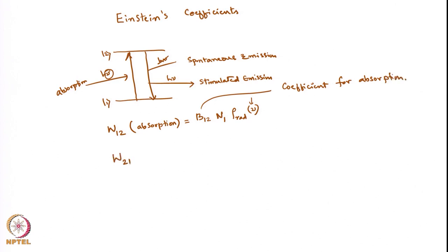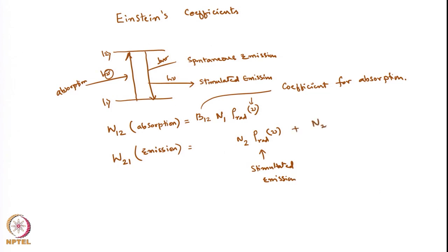Similarly, W21, that is emission, will consist of both spontaneous emission and stimulated emission. This will be equal to N2 times the radiation density rho(nu) for stimulated emission, plus N2 for spontaneous emission — since spontaneous emission does not need the radiation field and happens in the absence of H_mu. The proportionality constants are B21 and A21.